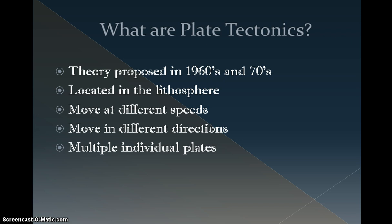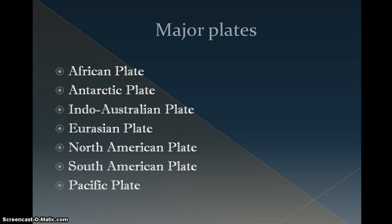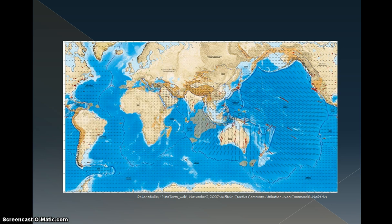Earth has seven major plates with multiple minor plates spread around. The seven major plates are the African plate, the Antarctic plate, the Indo-Australian plate, the Eurasian plate, the North American plate, the South American plate, and finally the Pacific plate. Here is a map showing the major tectonic plates. As you look over the map, notice where the plates meet and the geographic features located in these areas, such as mountains or volcanoes.